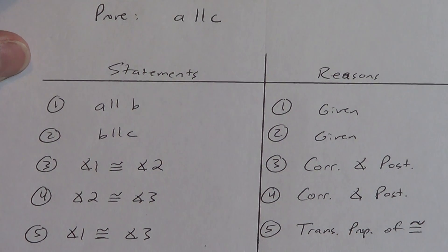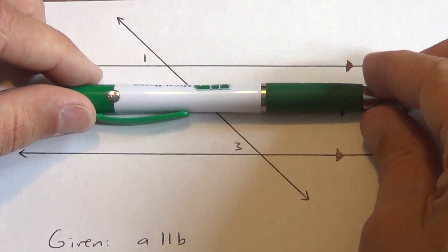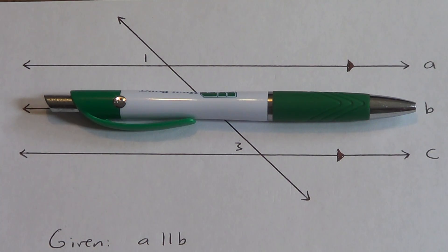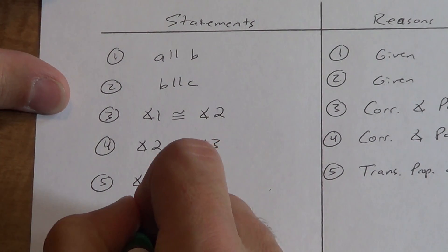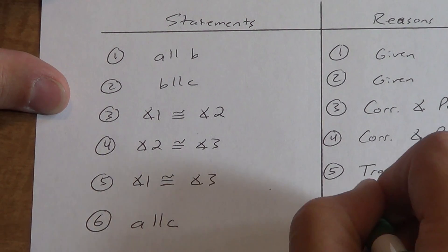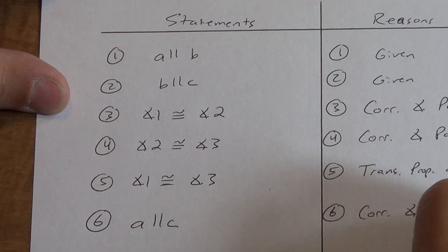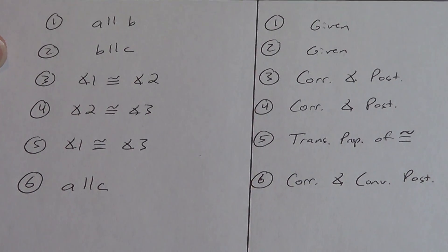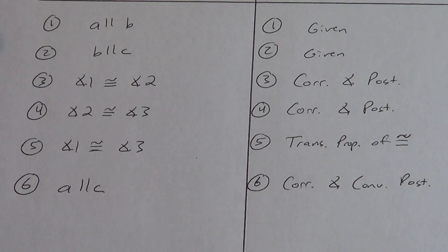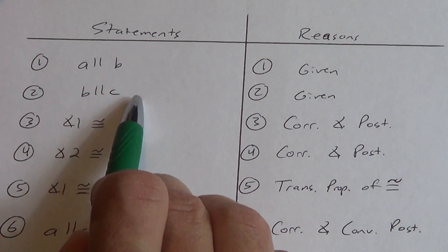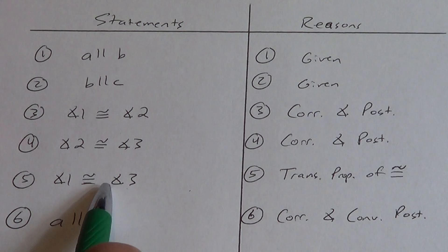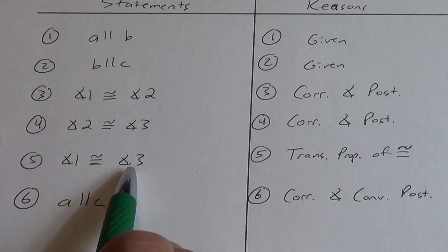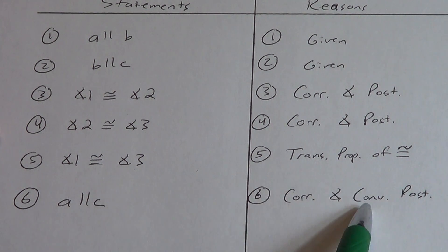Let's look back at the picture one last time — we only have angles 1 and 3 now, so angle 2 is out of the picture. Angle 1 is top left, angle 3 is top left — same position, so they're corresponding and congruent. If we already knew they're congruent, it forces the lines to be parallel. Which lines? Lines A and C. Why? Corresponding angle converse postulate. This one is a converse because we're going from congruent angles to parallel lines.